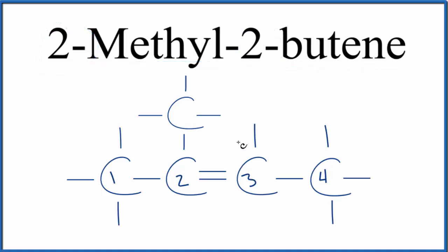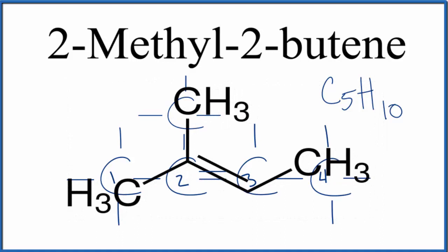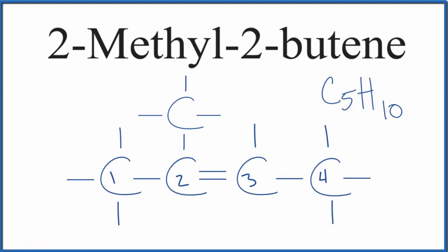If you count up all the carbon and the hydrogen atoms to get the molecular formula, you end up with C5H10. So that's the molecular formula. You could also look at this in a more skeletal form like this. And this would be another way to draw the structural formula for 2-methyl-2-butene. This is Dr. B. And thanks for watching.